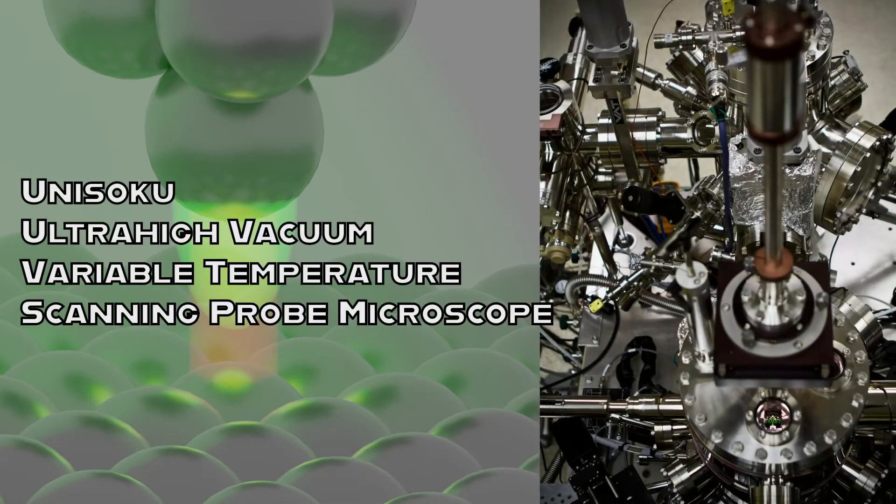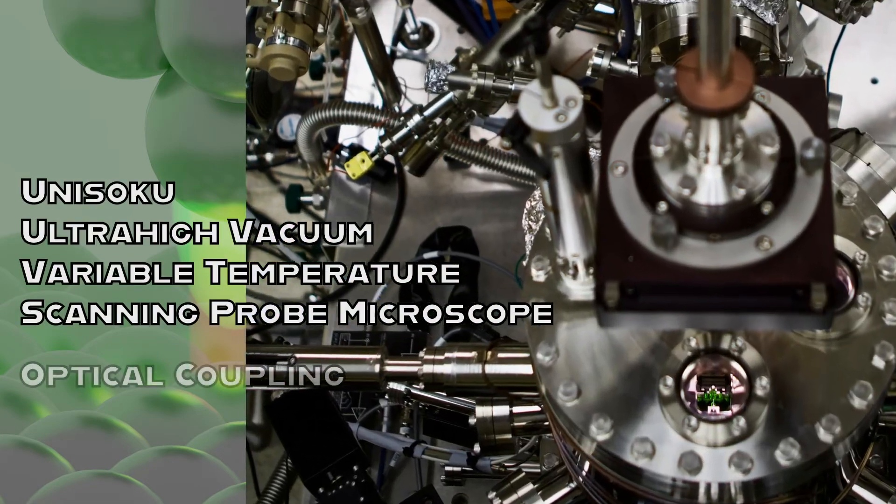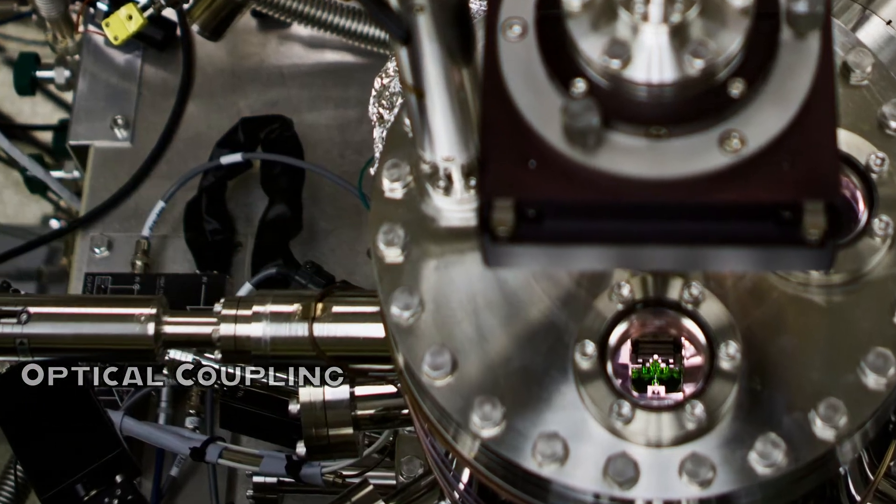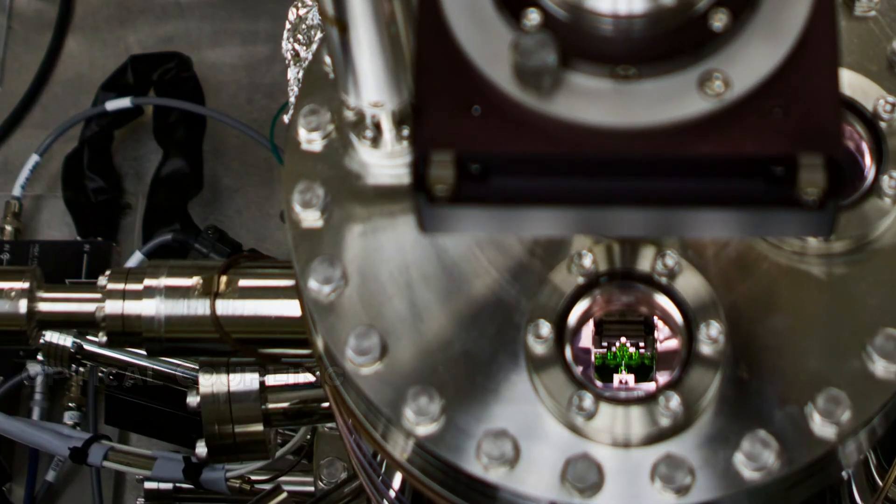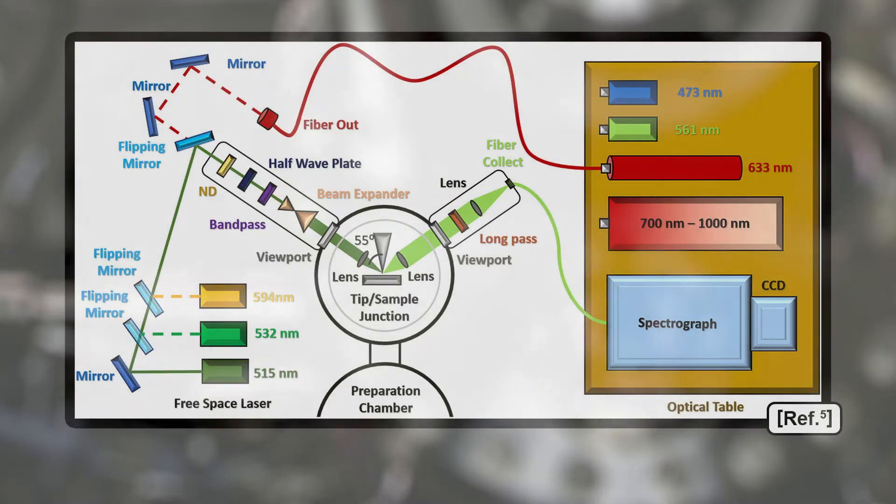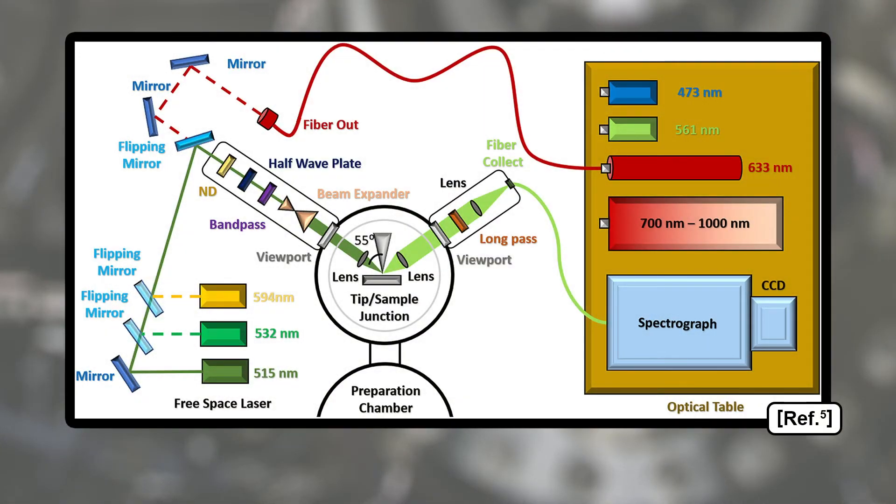My research relies upon an ultra-high vacuum, or UHV, custom-built variable temperature scanning probe microscope coupled with optics. This schematic illustrates the optics that allow us to efficiently couple lasers of multiple wavelengths to the tip-sample junction via a combination of optical fibers and flipping mirrors. Our excitation and collection lenses are located inside the chamber on the STM stage.